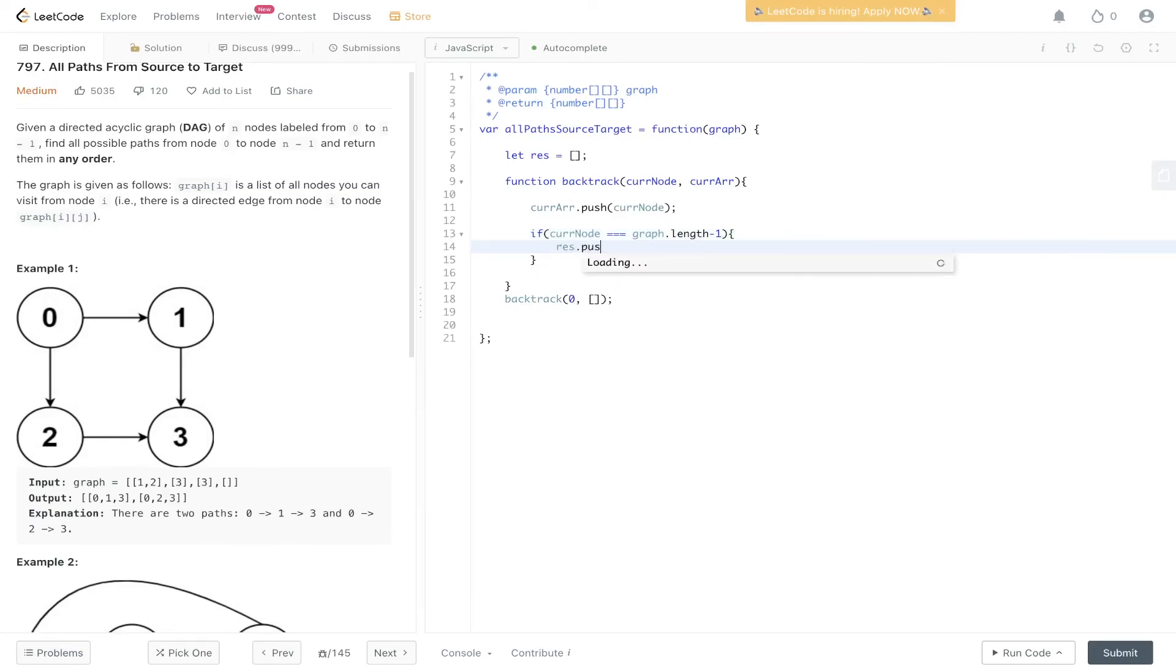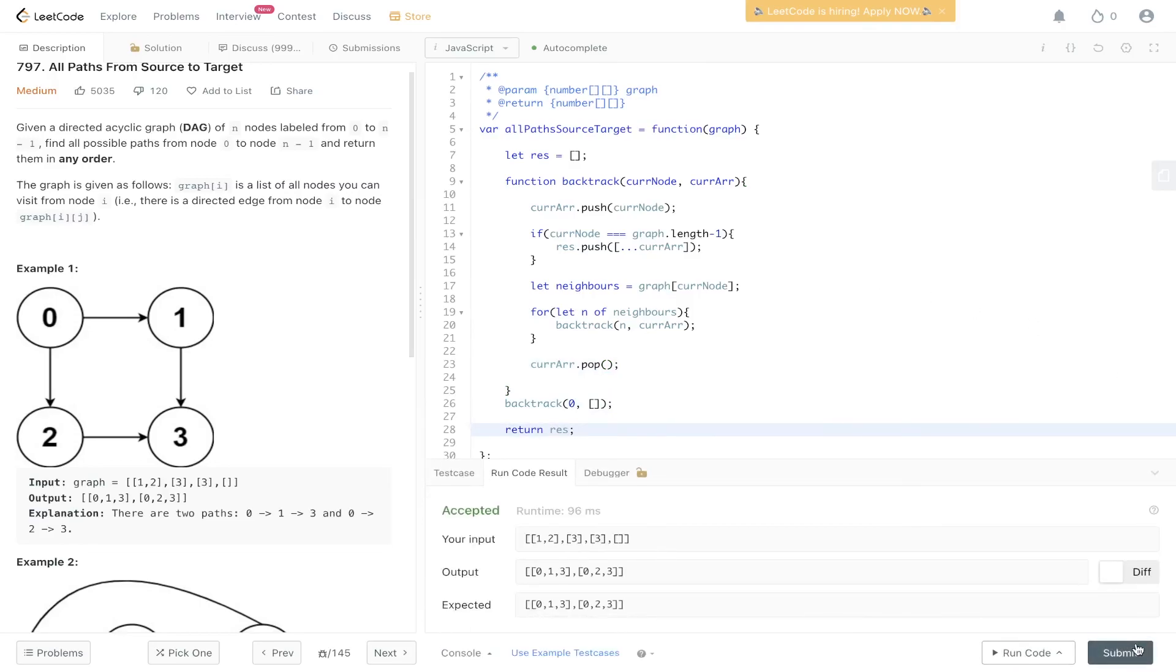If it is, then we just push into res a copy of current array. Then we can get the neighbors and loop through the neighbors. So we say the neighbors would be equal to graph at current node, because remember the graph is essentially an adjacency list. Then we can loop through those neighbors. So n of neighbors, and then we can call the backtrack function, passing in n and current array. And lastly we need to backtrack, so we need to pop off of current array. And then all that's left to do is return res. Give this a run, submit it, and there you go.